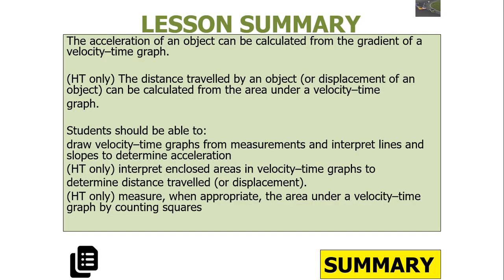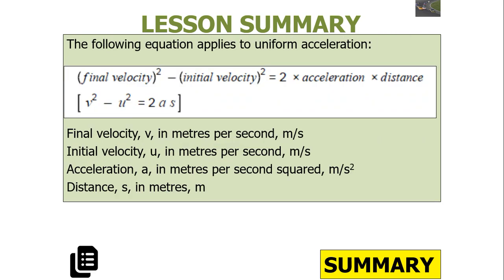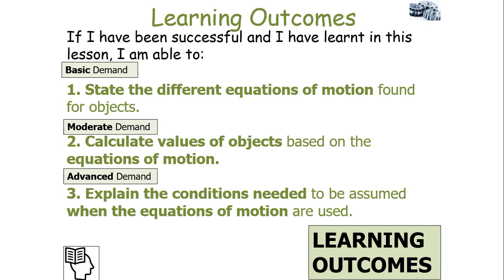So what have we learnt today? Acceleration can be calculated from the gradient of a velocity-time graph, and displacement from the area underneath. You can draw and interpret velocity-time graphs to find acceleration and distance travelled. You can use V squared minus U squared equals 2AS to work out values under uniform acceleration. By the end of this lesson you should be able to state the equations of motion, calculate values based on them, and explain the conditions needed to use them. Thank you very much — I hope you've enjoyed this lesson on the equations of motion!